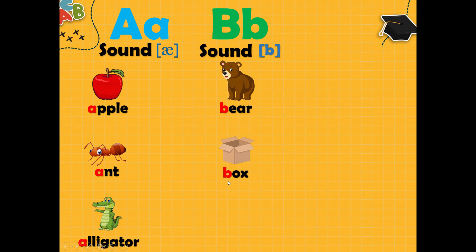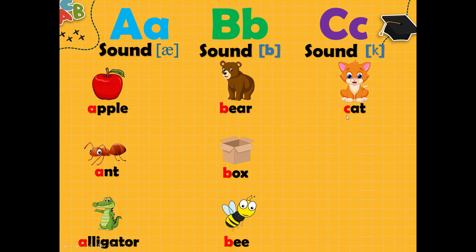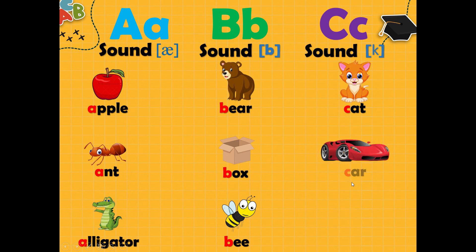Box. B, box. Good. Letter C gives sound K. Cat. K, cat. Car. K, car. Cut. K, cut. Good.